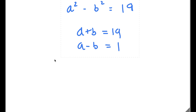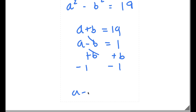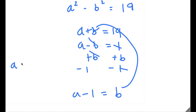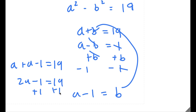We can simply solve for a and b because this is a system of equations. If a minus b equals 1, I'm going to add b on both sides and subtract 1 on both sides, leaving me with a minus 1 equals b. Plugging into a plus b equals 19: a plus (a minus 1) equals 19, so 2a minus 1 equals 19. Adding 1 on both sides gives 2a equals 20, meaning a is 10.